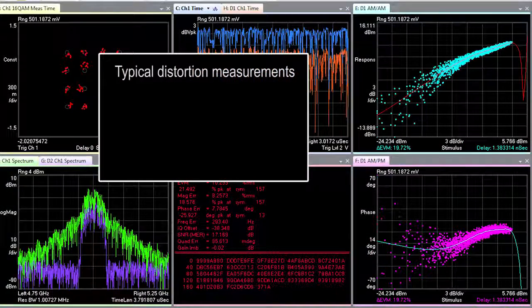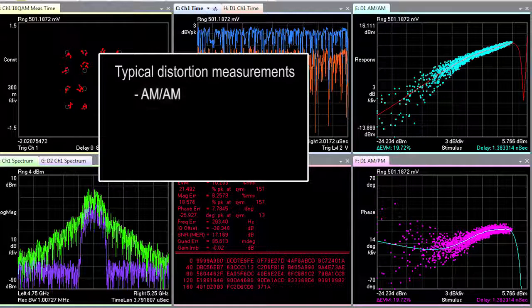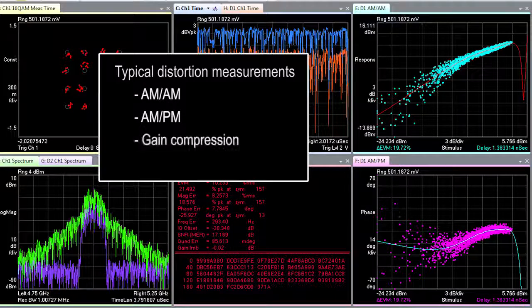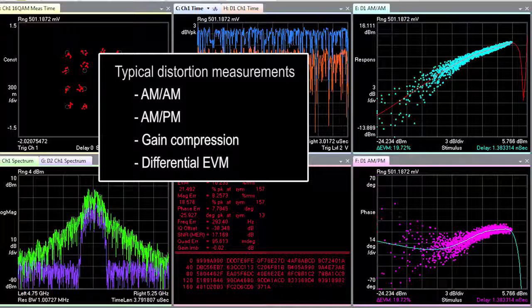Typical distortion measurements include AMAM, AMPM, gain compression, and differential error vector magnitude.